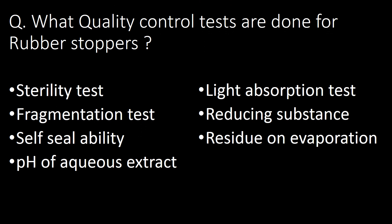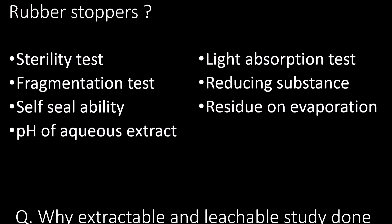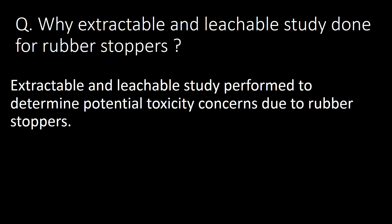What quality control tests are done for rubber stoppers? The following seven QC tests are performed: first, stability test; second, fragmentation test; third, self-sealability; fourth, pH of aqueous extract; fifth, light absorption test; sixth, reducing substances; and seventh, residue on evaporation.